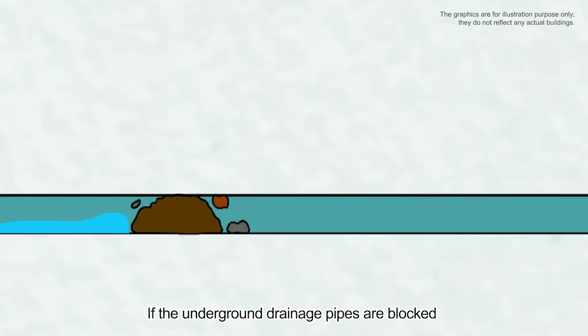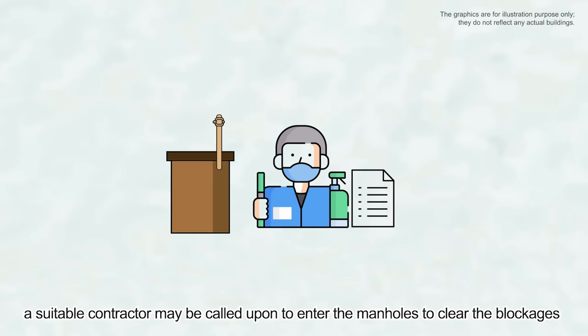If the underground drainage pipes are blocked, a suitable contractor may be called upon to enter the manholes to clear the blockages.